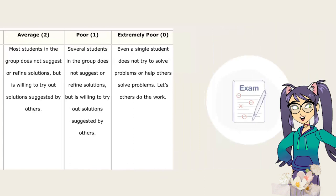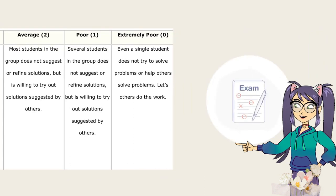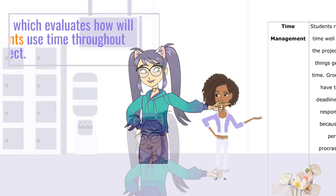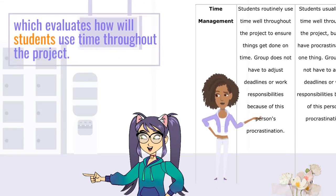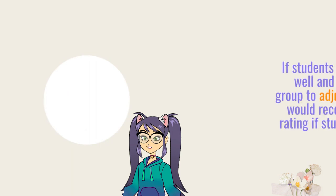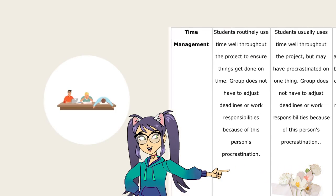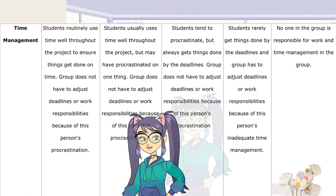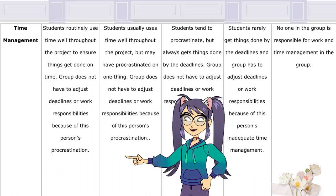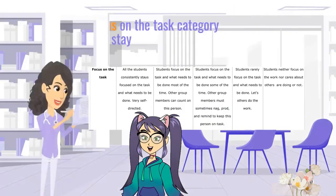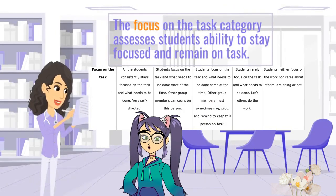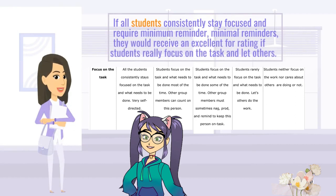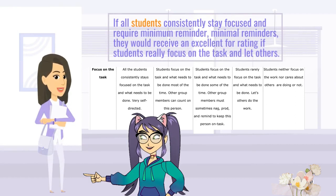If most students are willing to try out solutions but do not contribute ideas, they would receive an average rating of 2. Moving on to time management, which evaluates how well students use time throughout the project. If students routinely use time well and do not require the group to adjust deadlines, they would receive an excellent rating of 4. If students rarely meet deadlines and the group needs to adjust responsibilities, they would receive a poor rating of 1. The focus on the task category assesses students' ability to stay focused and remain on task. If all students consistently stay focused and require minimal reminders, they would receive an excellent rating of 4.